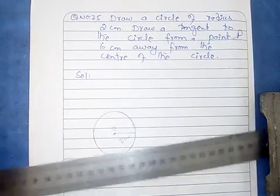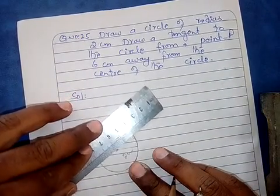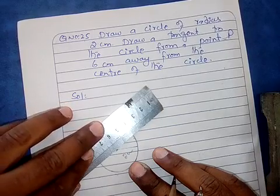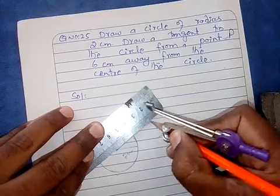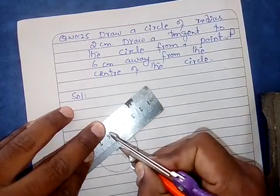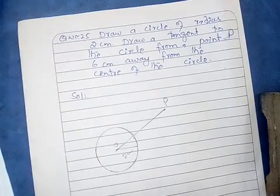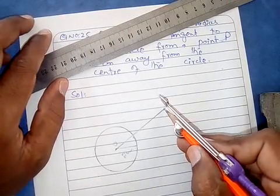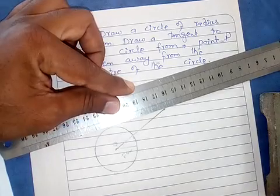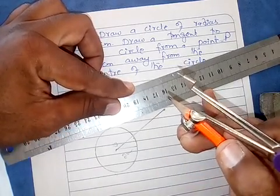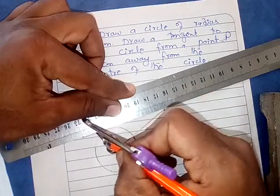اب اسی center سے 6 cm کے فاصلے پر آپ نے ایک point P consider کرنی ہے۔ Center سے 6 cm کے فاصلے پر — اگر ہم یہاں پر 6 cm consider کریں تو یہ point یہاں consider کی جائے گی۔ یہ point P ہے۔ اب اسی P point سے tangent گرانا ہے circle پر — یہ tangent circle کی کسی ایک point سے touch کرے گا، اوپر سے بھی یا نیچے سے بھی۔